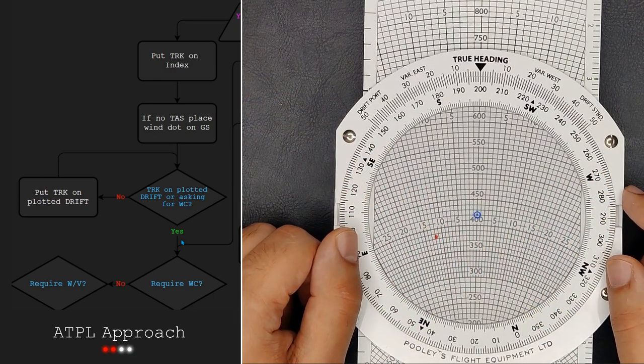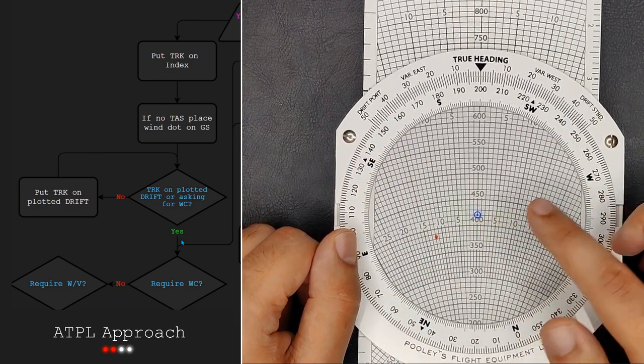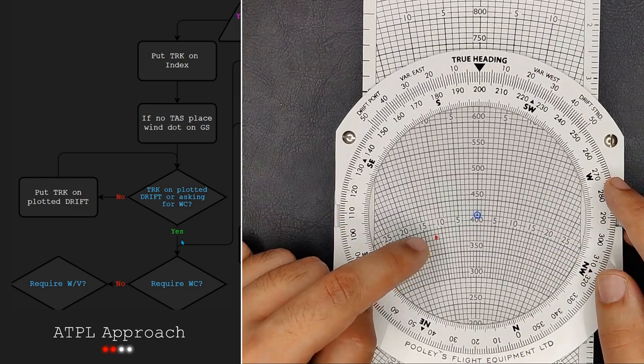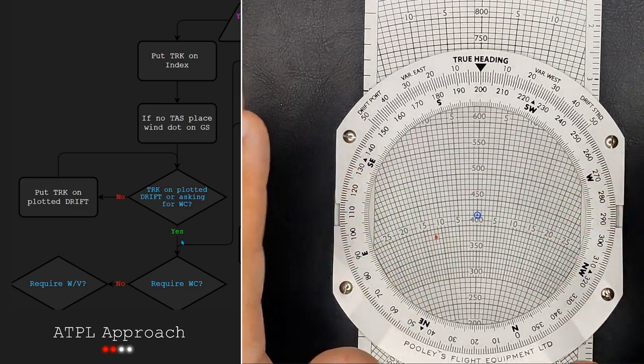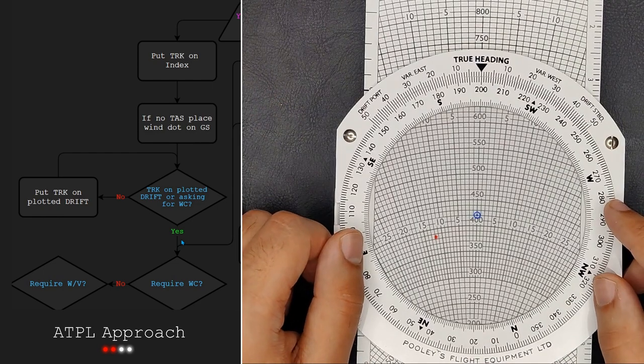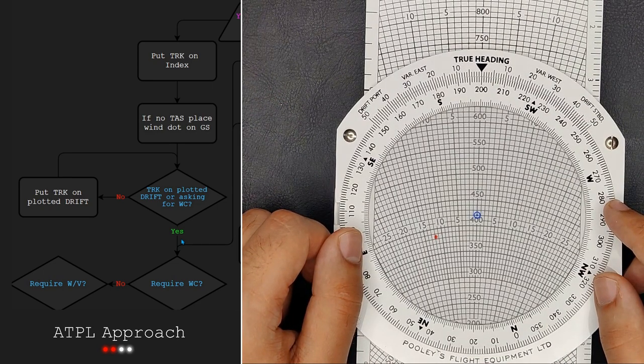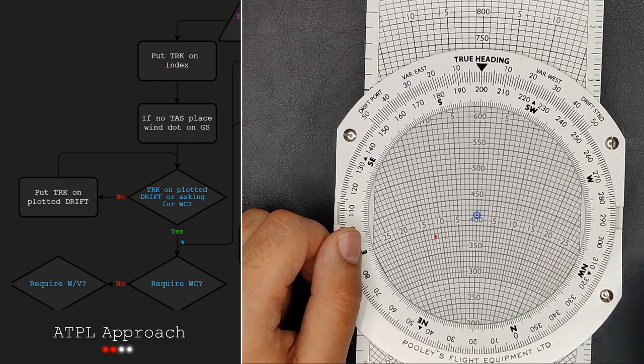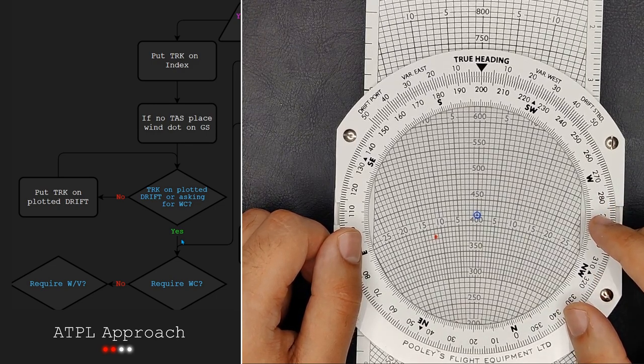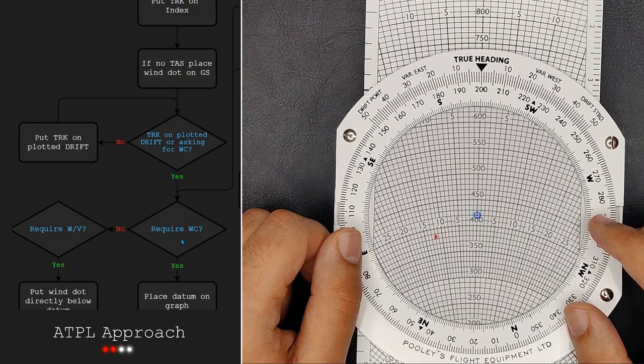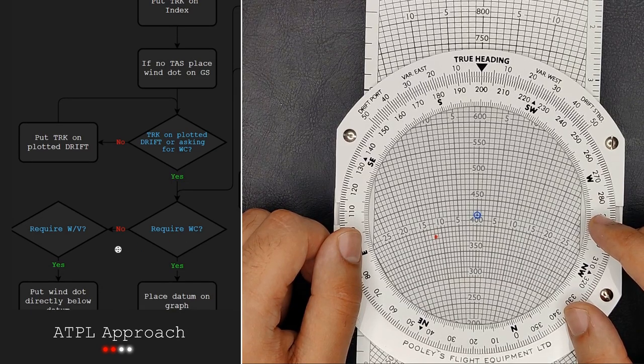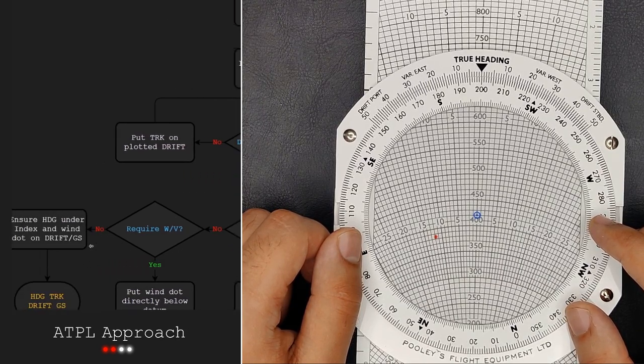We have the datum on the TAS and the track on the correct drift. We can now just read off the remaining values. However I will show you the path that this flowchart takes just in case you get stuck. As you can see it goes past the wind component which we don't need and also we don't need the wind as we had it from the start.